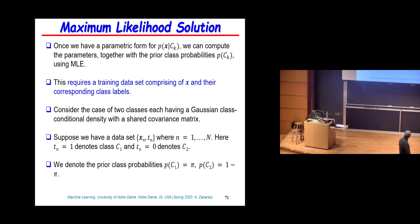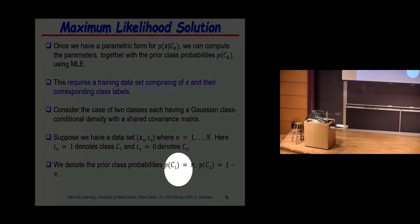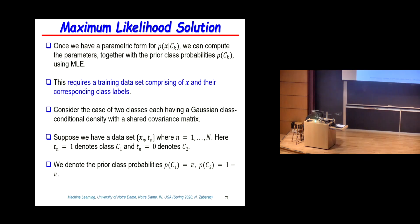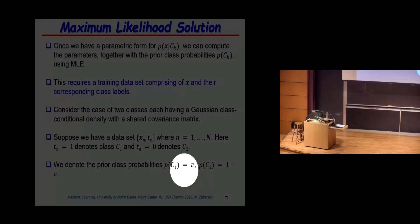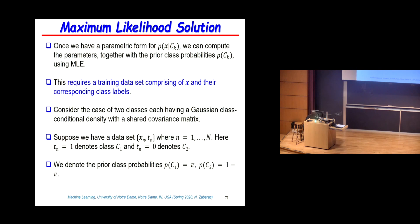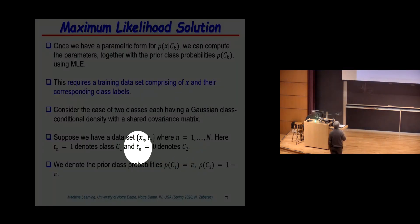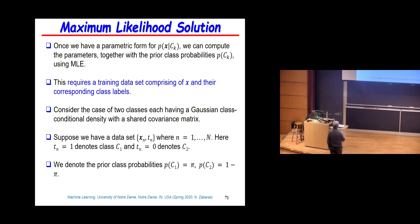The class conditional distributions have means, a covariance, and prior probabilities pi and 1 minus pi. The question is how to compute these means and covariance. We're going to use maximum likelihood, assuming I give you data points x_n and class labels t_n that are 0 or 1.